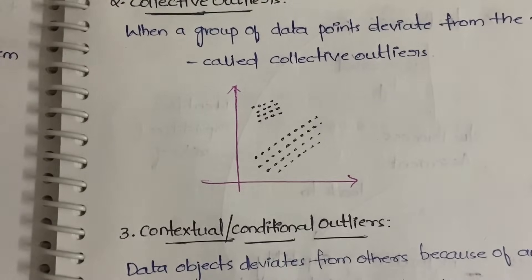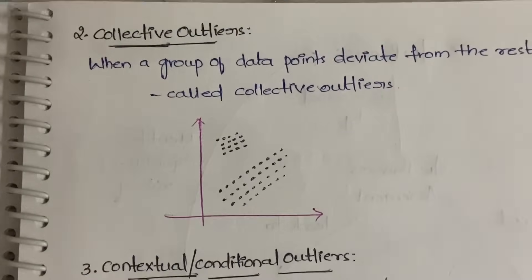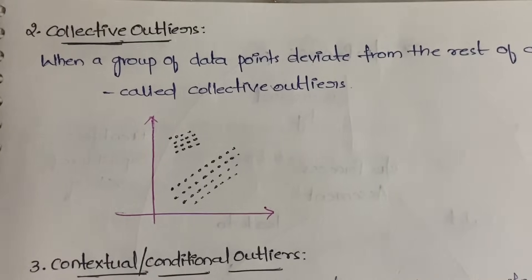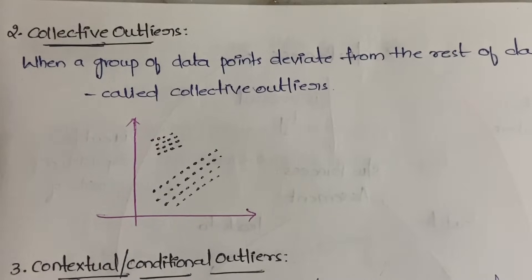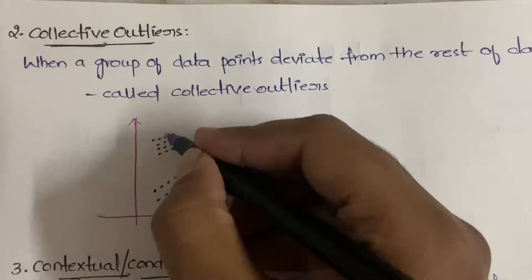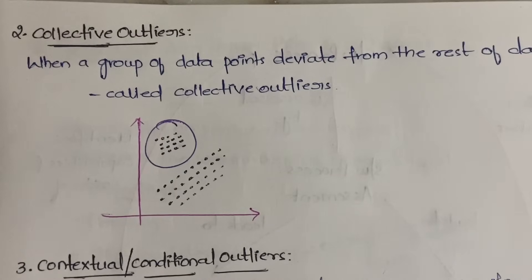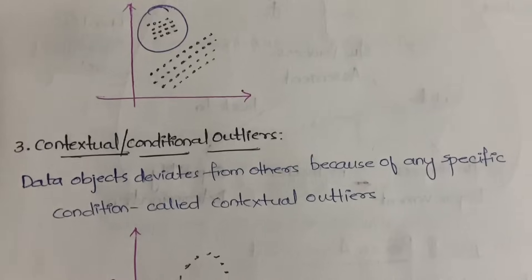The second type is the collective outlier. In the global or point type, a single data point is not obeying. But in collective outliers, a group of data points deviates from the actual behavior — the word 'collective' itself says it. So a group of data points will be deviating away together.